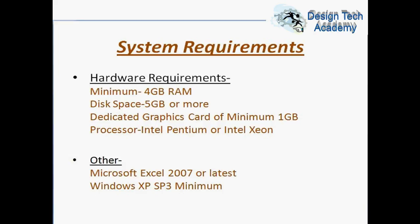The system requirements for CATIA — these are the minimum requirements to use CATIA. The minimum requirements are: 4GB RAM, 5GB internal storage space, 1GB graphics card, and you can use Windows XP Service Pack as the minimum Windows requirement.